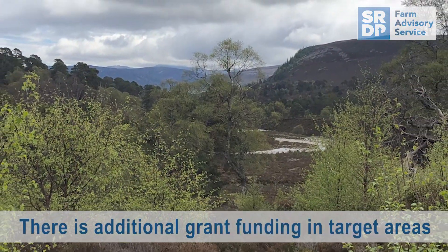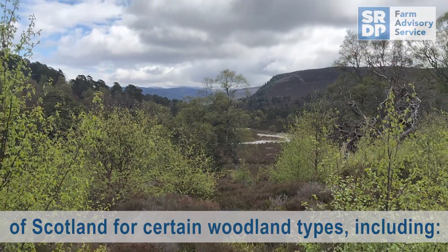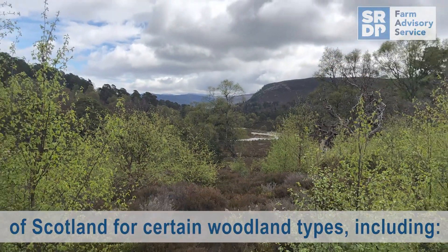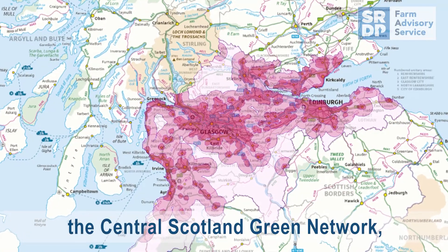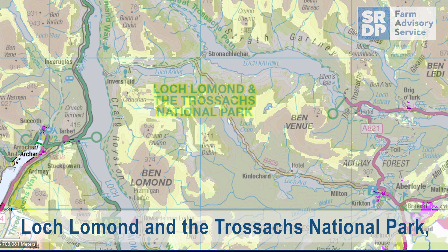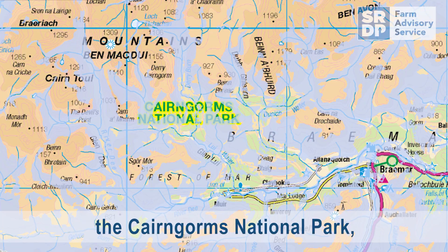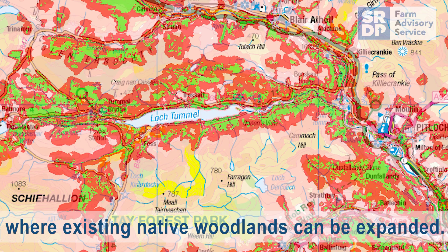There is additional grant funding in target areas of Scotland for certain woodland types, including the Central Scotland Green Network, Loch Lomond and the Trossachs National Park, the Cairngorms National Park, the Native Scots Pinewood Zone, and places where existing native woodlands can be expanded.